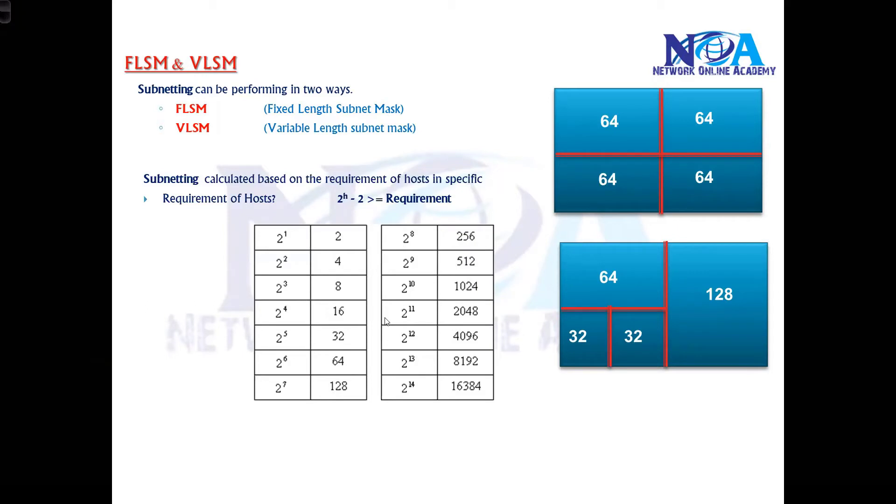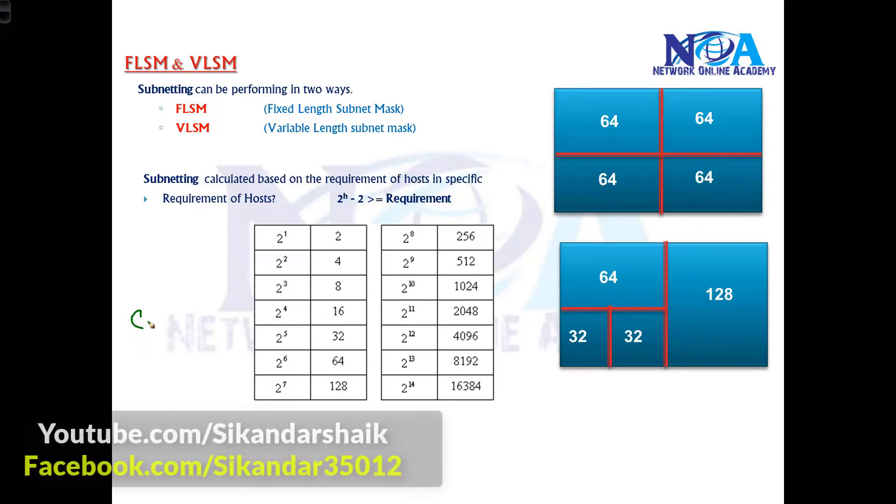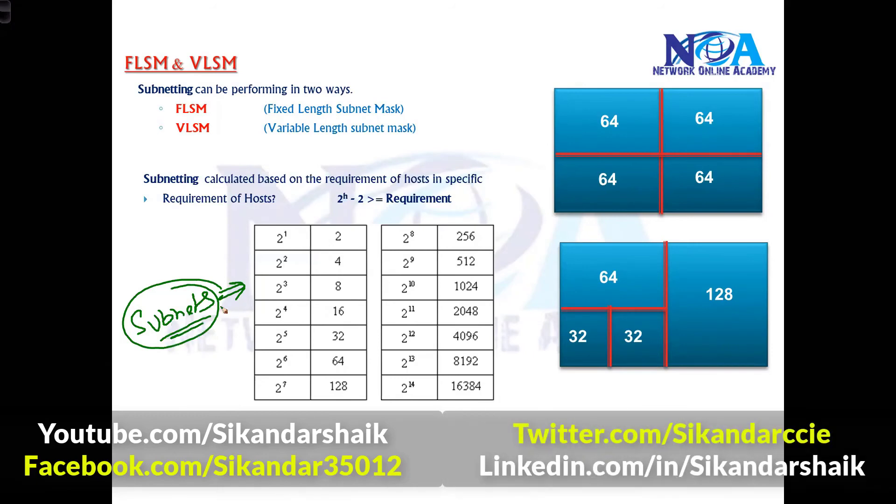The networks which we divide, we call them as subnets. Most of the time I'll be using the keyword subnets. A subnet means the subnetworks—the small networks we get after dividing the default networks.